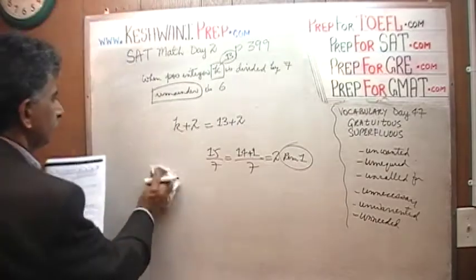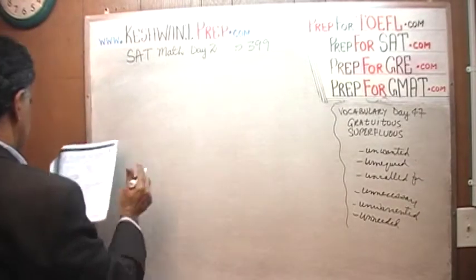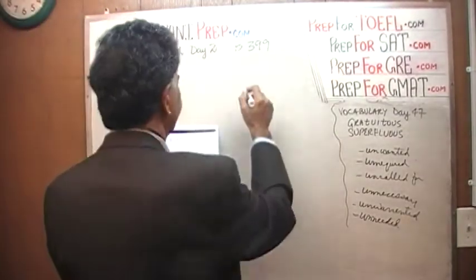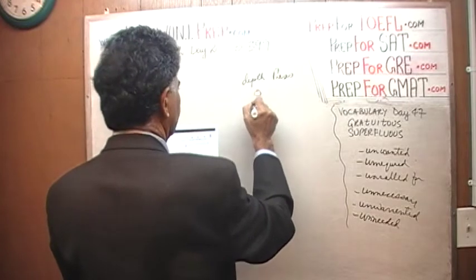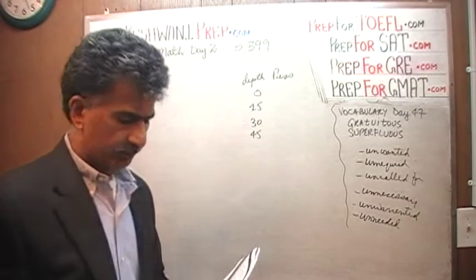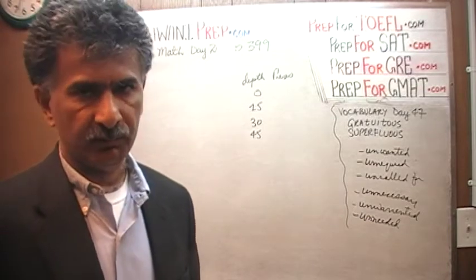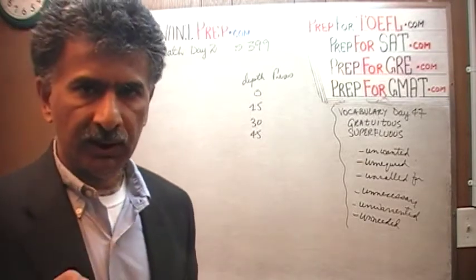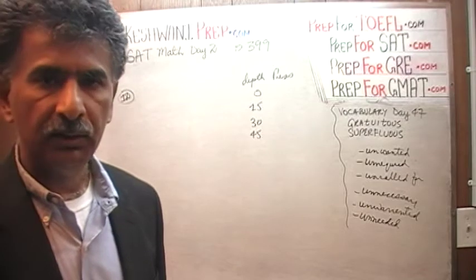Let's look at 12. In 12, we are given a chart. It looks something like this. There is our depth. There is the pressure. 0, 15, 30, and 45. The very first thing we should notice is that as the depth goes up, so does the pressure. In other words, the relationship is positive between the two variables. When one variable goes up, so does the other. Which means the slope of this line, if we were to plot the pressure versus the depth, the slope has to be positive. The line has to be positively sloped.